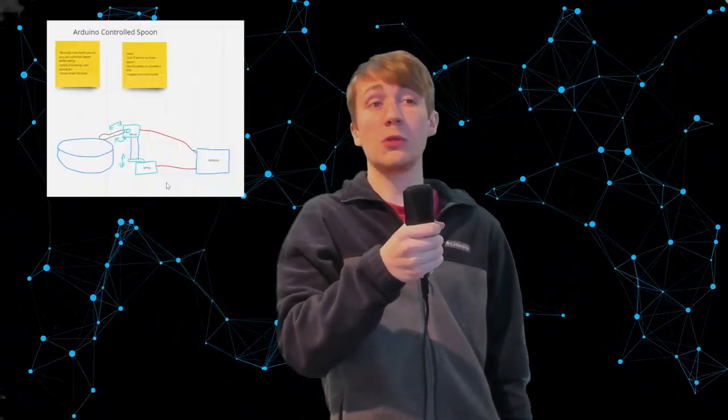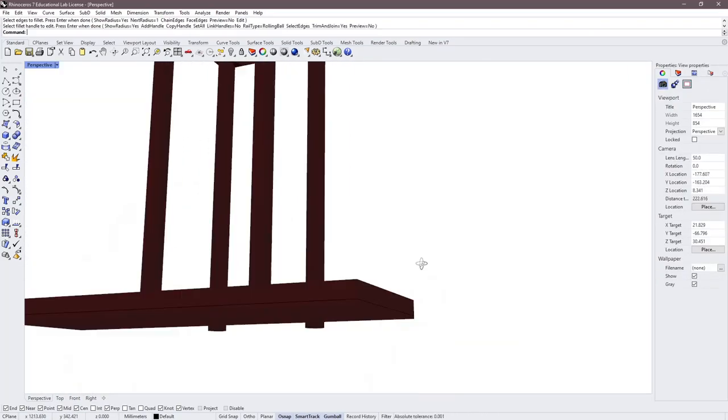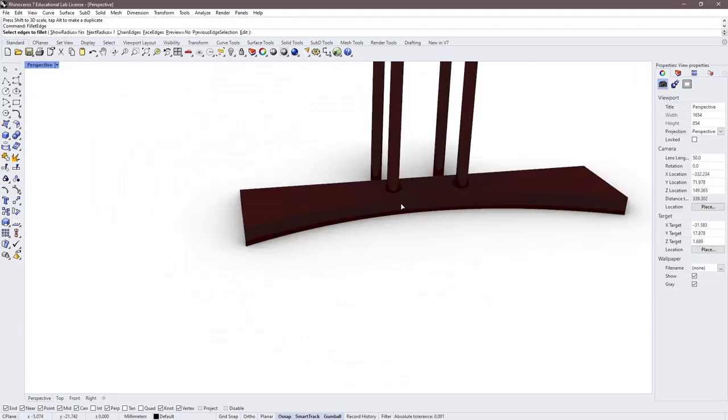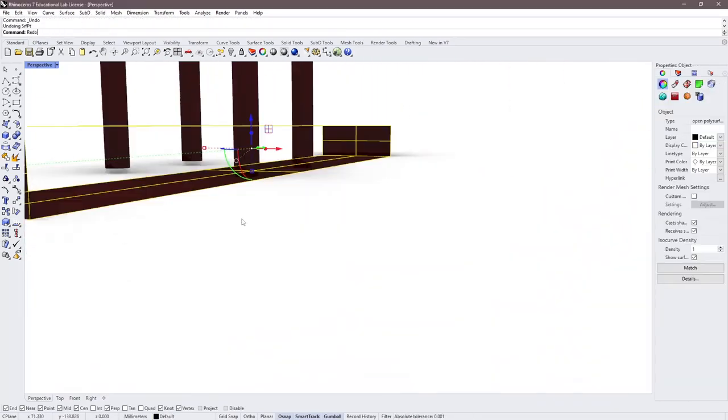For my first of the three robots, Arduino-controlled spoon, I already had my horrible concept sketch, which somehow turned out to be almost exactly what I ended up making. I started out by creating a 3D model in Rhino. It consisted of a stable base and a pan-tilt servo setup with a spoon holder at a decent height to reach the bowl.